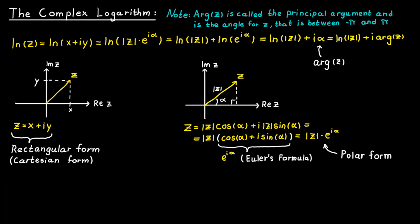So in short, the principal argument is just one number, just one angle for a complex number, while the argument of a complex number is all possible angles.